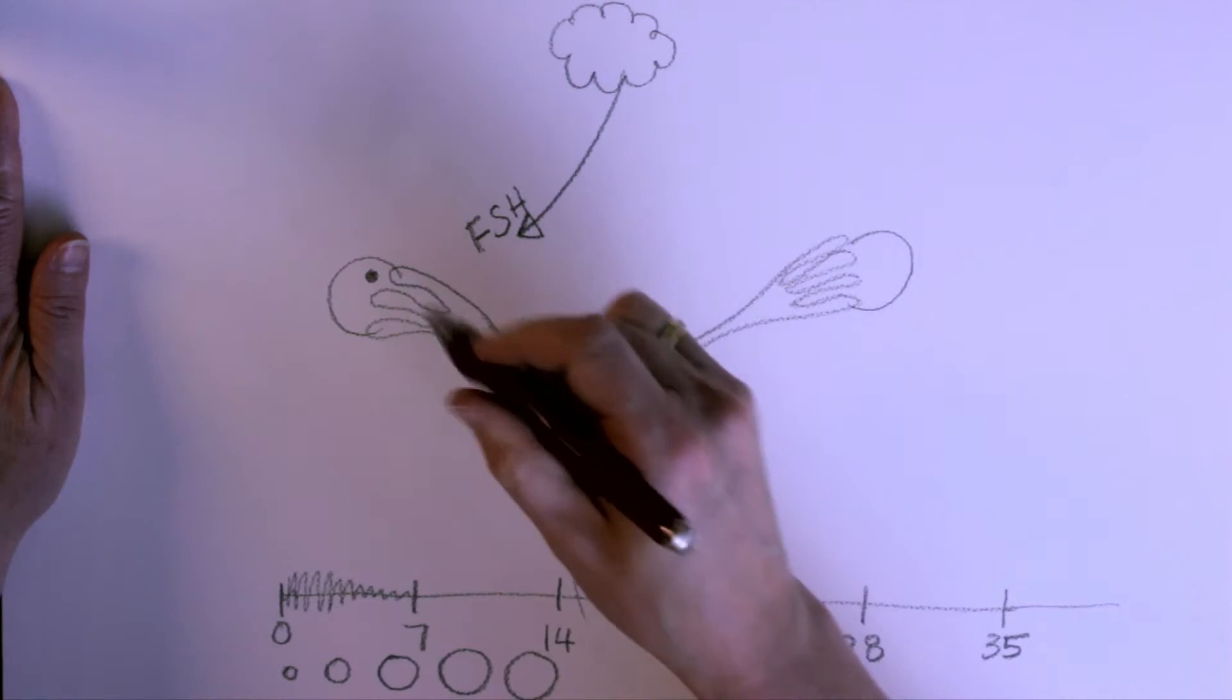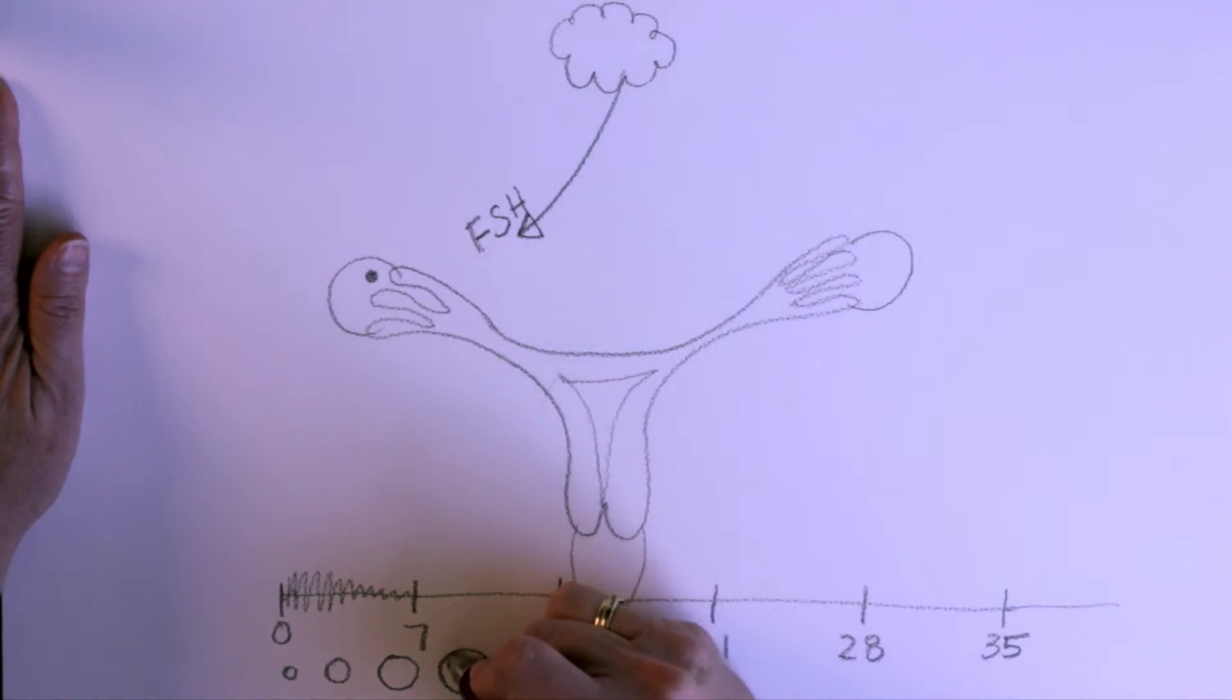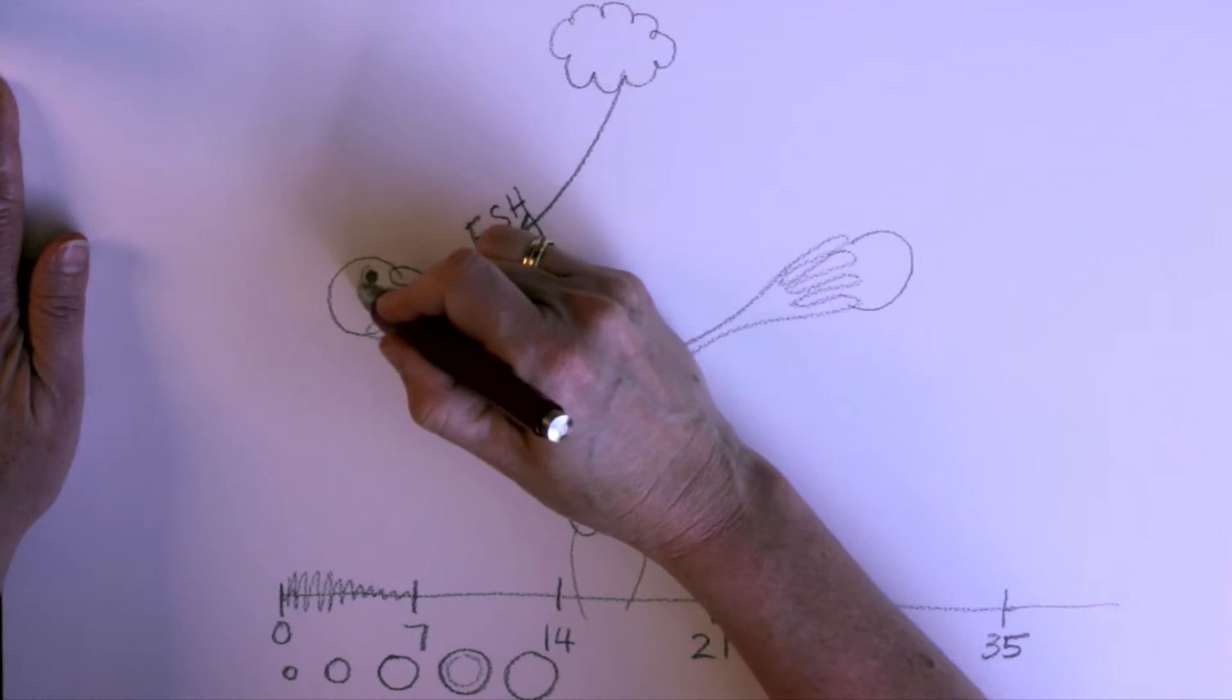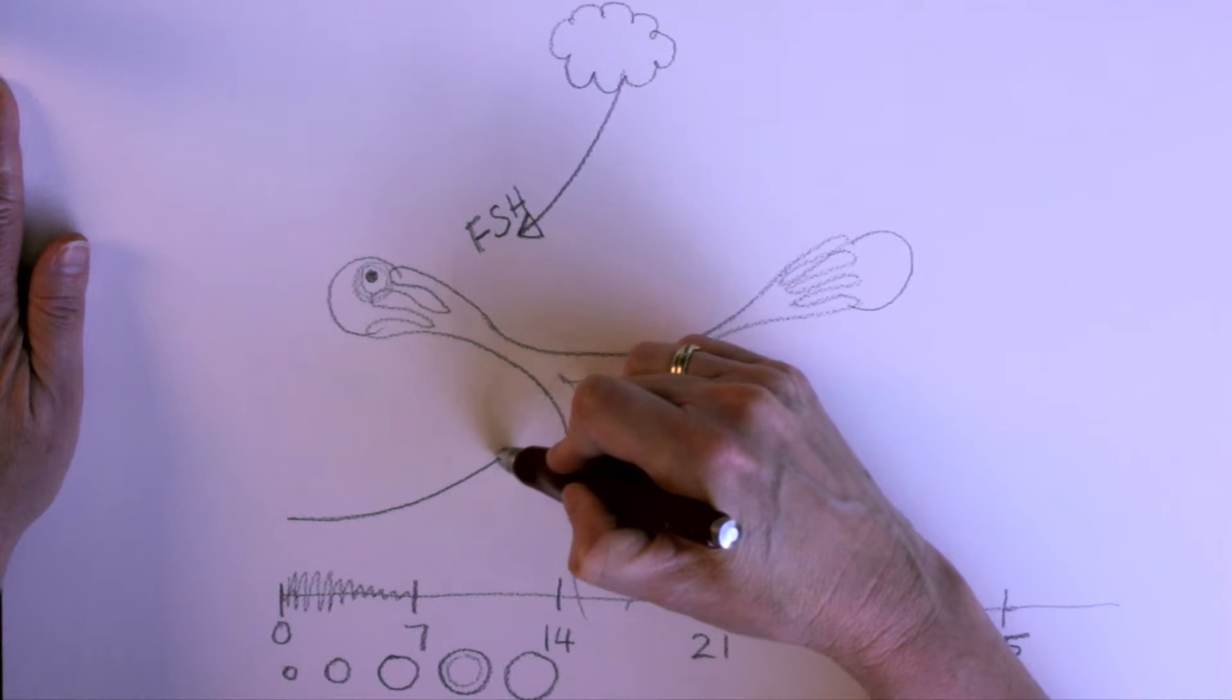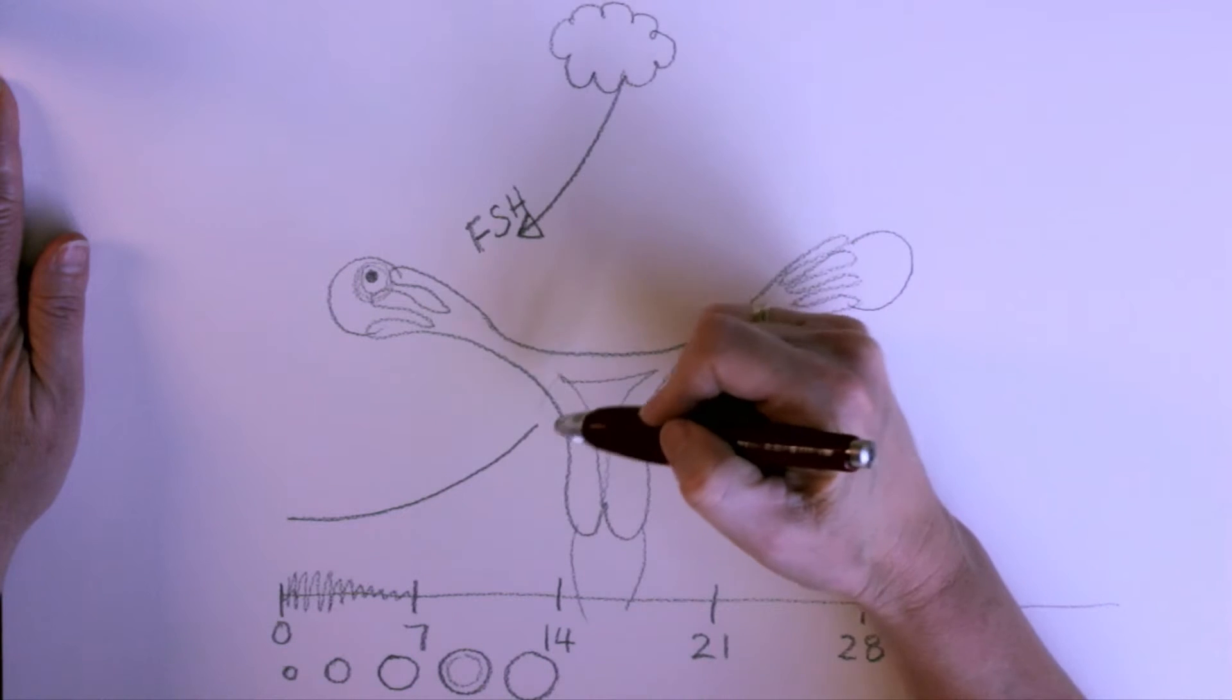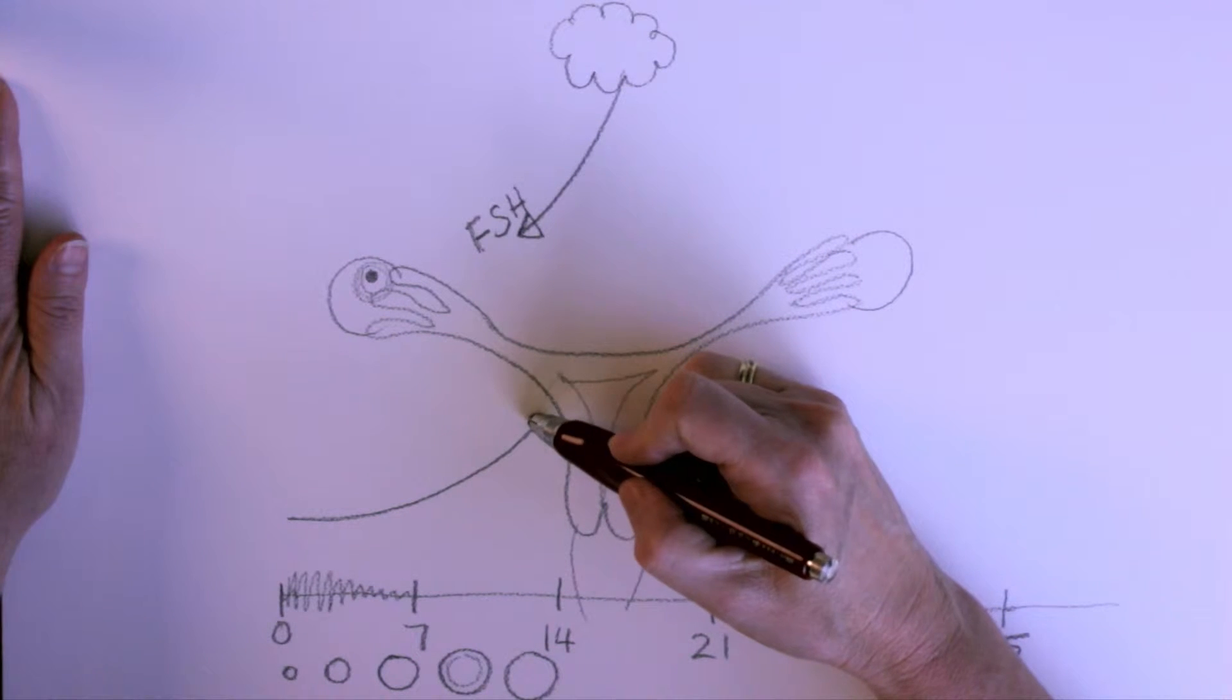Inside this follicle, sitting in your ovary as it gets bigger, that starts to produce a hormone called estrogen. So, your estrogen starts to go up like this over the month,